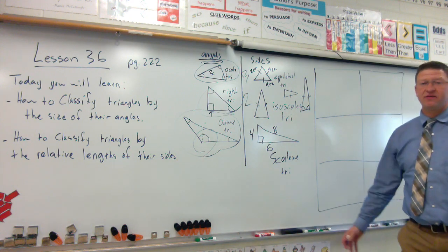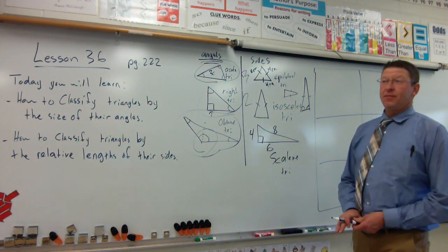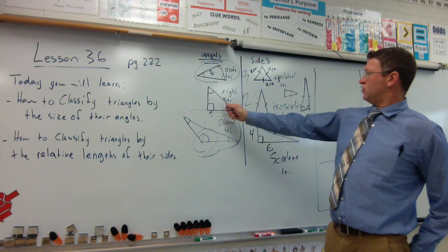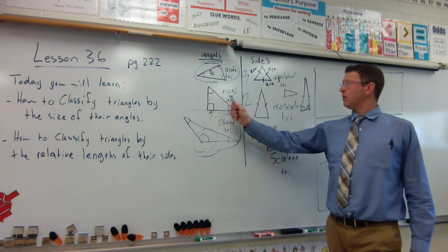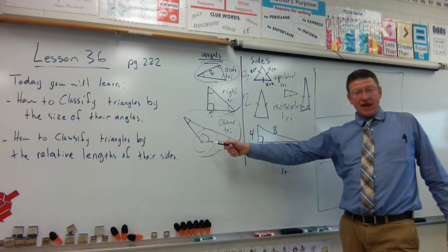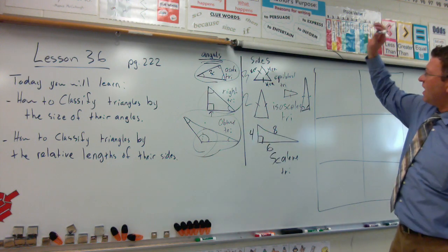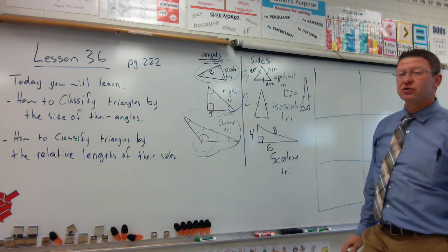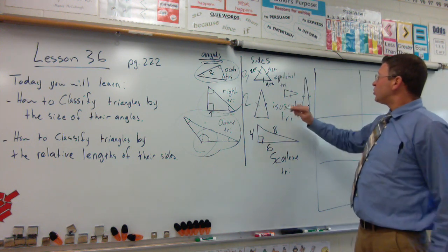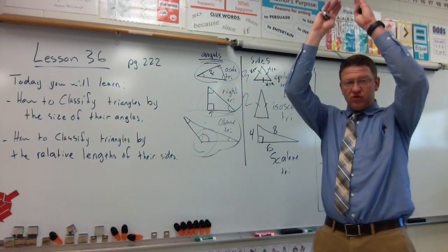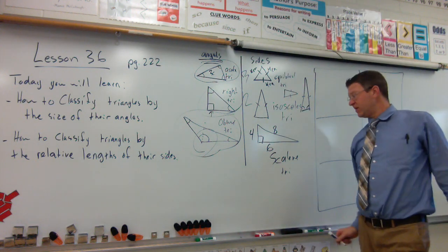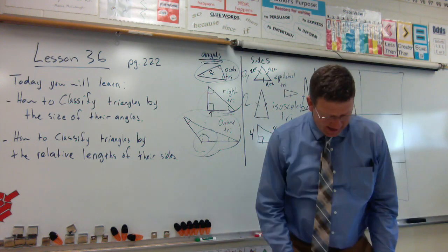So, there we have six new vocabulary words for today. Three angles the same, acute triangle. One right angle, right triangle. One obtuse angle, obtuse triangle. Now, if you're looking at the sides, three sides the same, equilateral triangle. Hope you're saying them out loud at home. Two sides the same, tall and skinny usually, isosceles triangle. And if all the sides are different, that would be called a scalene triangle.